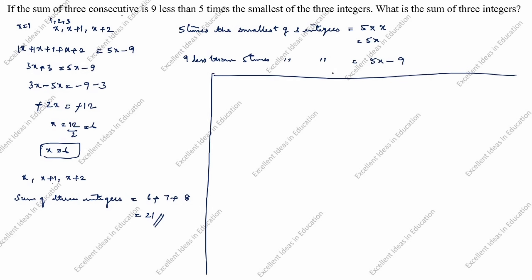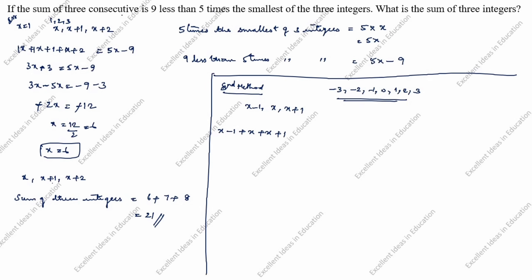Next we will see the second method. In the second method, we will take three consecutive integers as x minus 1, x, and x plus 1. The sum of three consecutive integers is x minus 1 plus x plus x plus 1, equal to 9 less than 5 times the smallest of the three integers.